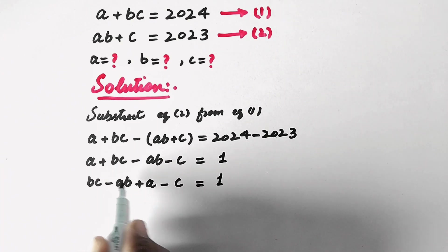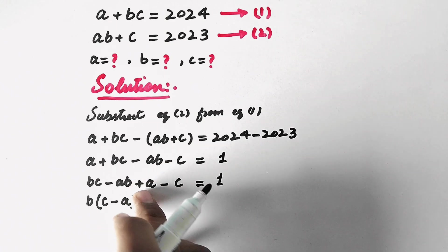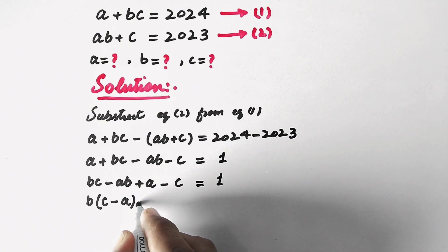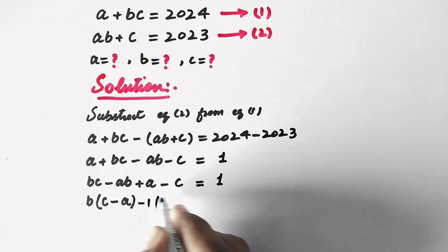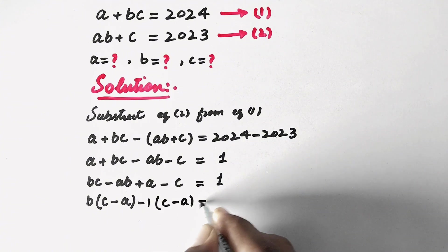And now we can see that B is common in these two values, so we will take B as common from here. Then it will be B times (C minus A), and from here we will take minus 1 as common. So it will be B(C - A) - 1(C - A) equals 1.